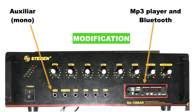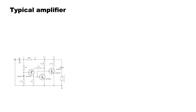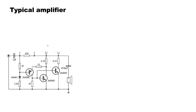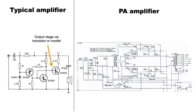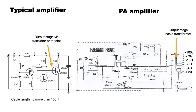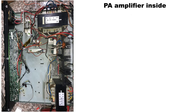Let's see the difference between a typical amplifier and a PA amplifier. In a typical amplifier, the output stage is a MOSFET or transistor — speakers are directly connected to the transistor, sometimes through a capacitor to filter DC. In the PA amplifier, the output of the transistor is connected to an output transformer, which steps it up to 100 or 70 volts for transmission. That's the main difference: in a typical amp the output stage ends at the transistors; in the PA amp it ends at the transformer.